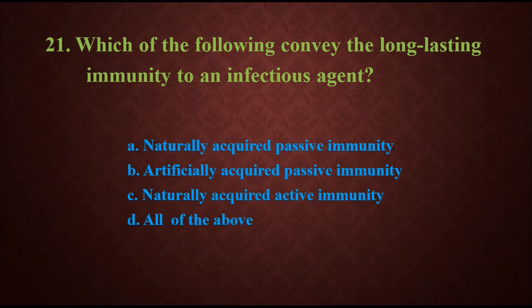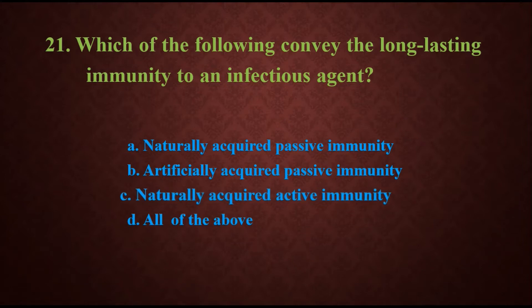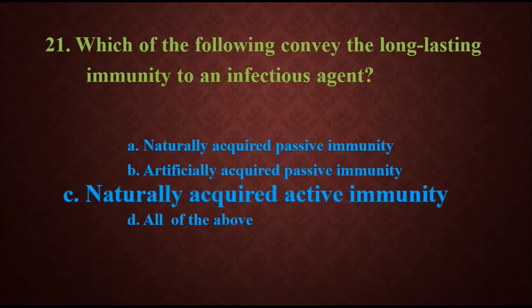Generally, immunity is classified into two types: innate immunity and acquired immunity. Acquired immunity is further classified into passive and active. If you have natural exposure to an infectious agent, you acquire immunity through your own body's participation — this is called active immunity. So obviously the answer will be C) naturally acquired active immunity.